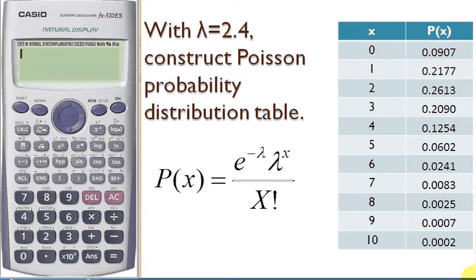In this video, I will show you how to construct a Poisson probability distribution table by using a Casio FX570EX scientific calculator.